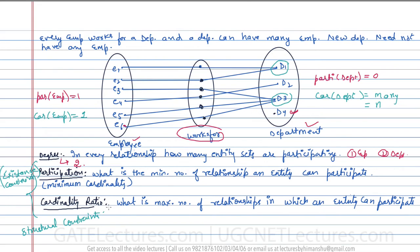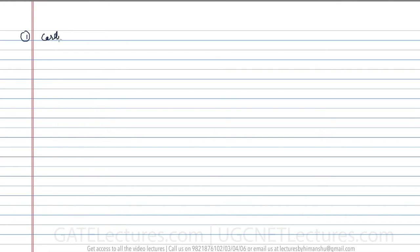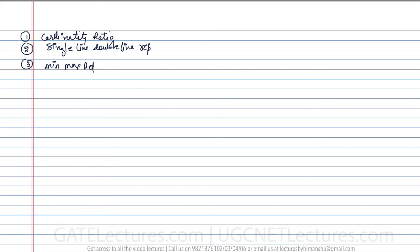In this relationship the degree is two, so this type of relationship is called a binary relationship. In this binary relationship we calculate the cardinality ratio and the participation. Participation is the minimum number of relationships an entity can participate in, and cardinality is the maximum. This kind of relation can be denoted by three representations: the cardinality ratio representation, the single-line and double-line representation, and the min-max representation.